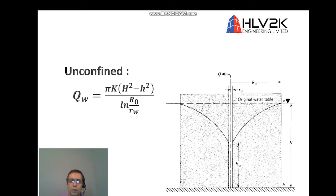And this is for unconfined aquifers. The same thing, but here we have the water table. So capital H is the elevation of the groundwater table from a datum, which usually is a bedrock or an impervious layer. R_0 is the radius of influence and r_w is the radius of the well.